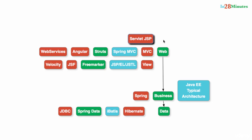If it's a web application, the web layer deals with how you take the business logic and expose it to the UI. If it's a web service, it converts data from the business layer into JSON or XML to send to the outside world. The business layer is where all your business logic is present — things like transaction management. The data layer is concerned with how to take data and store it to the database.